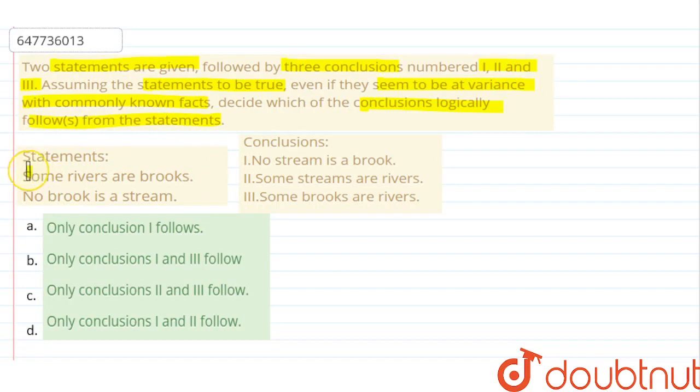The statements you have: some rivers are brooks, and the second statement is no brook is a stream. Conclusions you have: no stream is a brook, some streams are rivers, and some brooks are rivers.